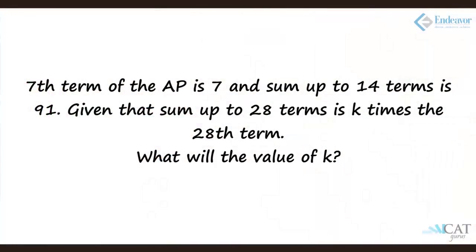Let us look at applications of various types of progression. We will start with arithmetic progression first. The seventh term of an arithmetic progression is 7 and the sum up to 14 terms is 91. It is given that the sum of the first 28 terms is k times the 28th term. Find k.